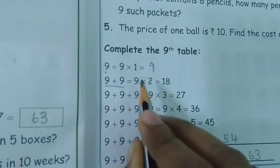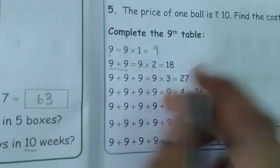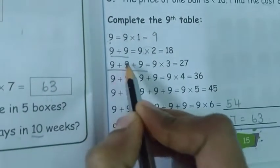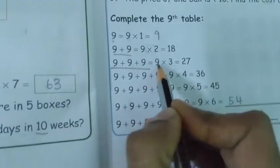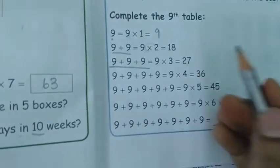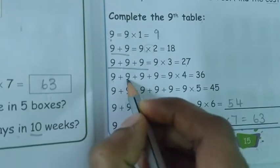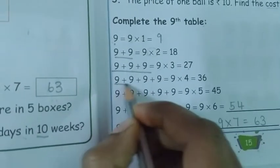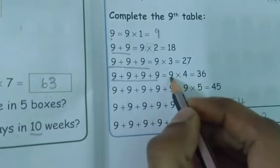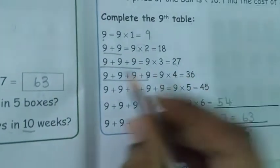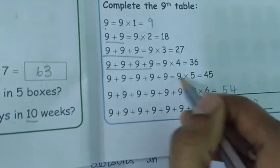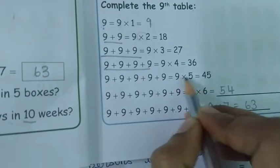Repeated addition short form is multiplication. Next, 9 plus 9 plus 9 — here giving 3 times, 9 will be repeating. So 9 threes are 27. Next, 9 continuously added 4 times, so 9 fours are 36. Next, 1, 2, 3, 4, 5 — 9 fives are 45.